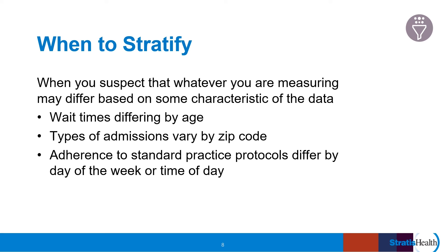Stratification can help you better understand your data and can aid in designing the most effective and impactful intervention to improve quality. When data is aggregated, it can mask important differences. For example, an aggregate readmission rate may look great, but when you break it down into other strata — by diagnosis group, for example — you may find big differences that better highlight areas for improvement. You may think you're doing quite well when there are actually some large gaps or disparities. As you collect and study your data and are initially seeking to identify areas for quality improvement, stratification can reveal opportunities to focus on. Before you begin your actual data collection, consider any categories or characteristics you'll need to stratify and ensure you are collecting that level of detail.